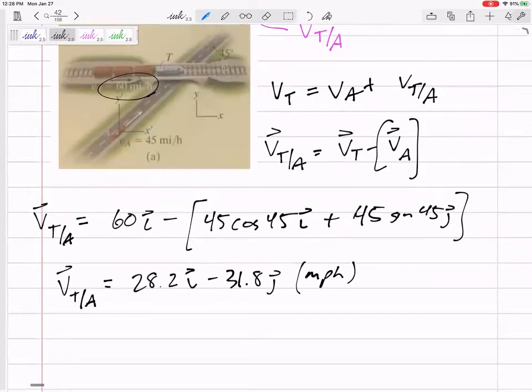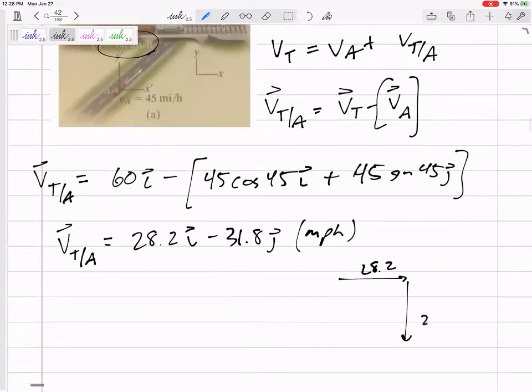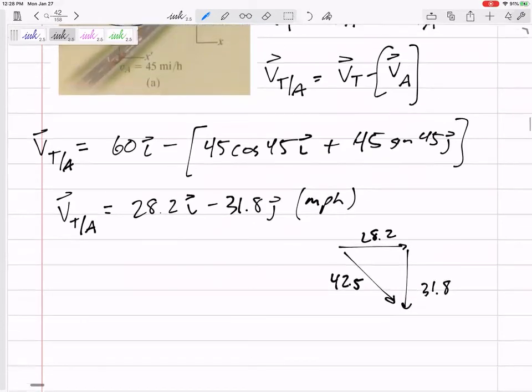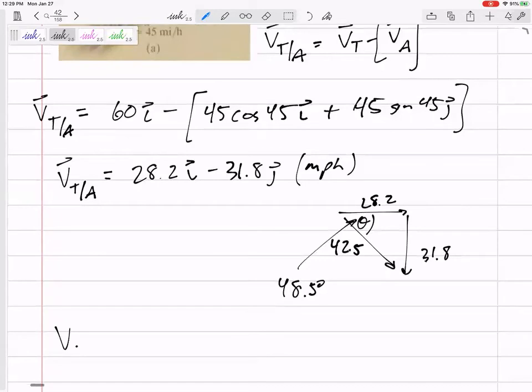Let me kind of draw it over here. So it's going to the right, 28.2. It's going down, 31.8. So it's really going the magnitude, 28.2 squared, 31.8 squared, 42.5 is the magnitude. What about the direction? What would this direction be? I would use tangent, inverse tangent, opposite over adjacent, 31.8 over 28.2. And I would get this angle is 48.5 degrees.